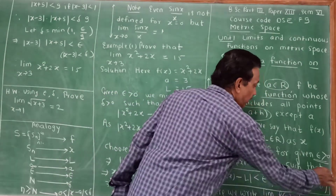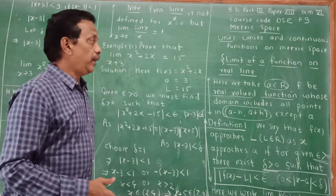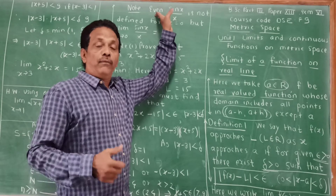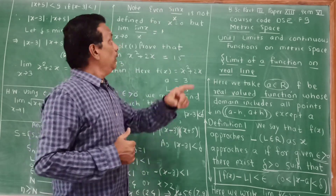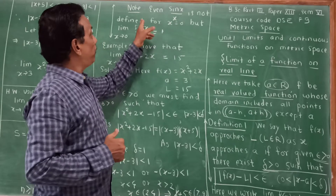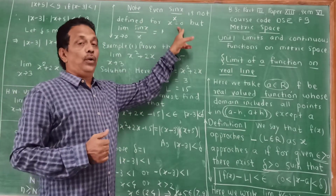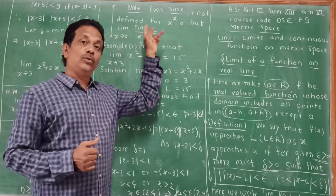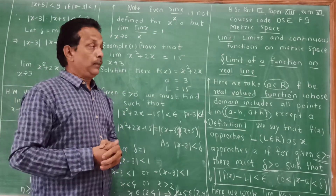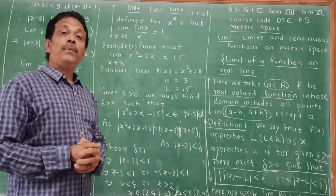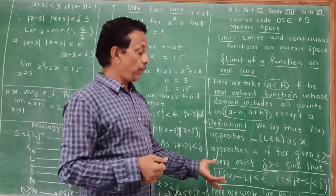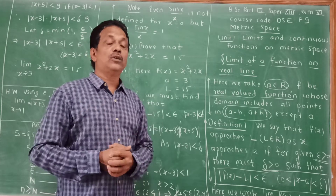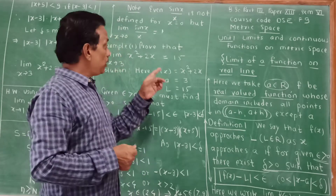With this definition, consider one important note: even if a function is not defined at a point, the limit can still exist. For example, sin(x)/x is not defined for x equal to 0, but the limit of sin(x)/x as x tends to 0 is equal to 1. Here are some examples of how we can prove that the limit of f(x) as x tends to a equals L using the epsilon-delta definition.